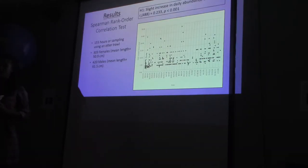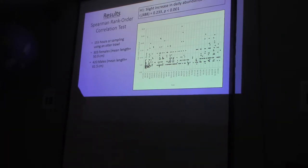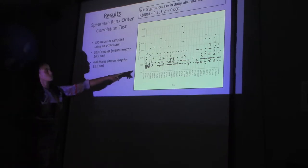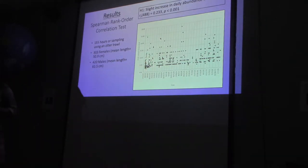For the results of hypothesis 1, looking at daily abundance over time, this includes every single shark caught from January to December, 1998 to 2017. This included 155 hours of sampling using an otter trawl, and 303 females and 420 male leopard sharks. The Spearman rank order correlation test determined there was a very slight increase in abundance over time — sporadic, with no linear or quadratic trend. There are areas where we have lots of data, areas where we don't, and some where we caught lots of sharks.